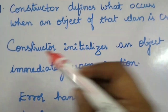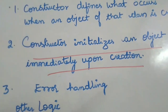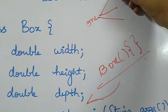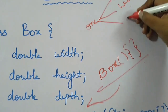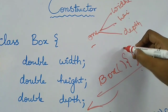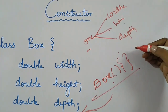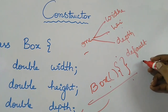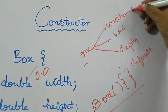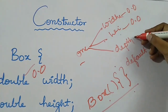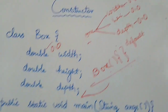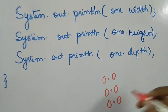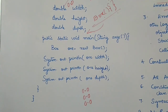The purpose of this constructor is that it initializes an object immediately upon creation. The object named 'one' holds three instance variables: width, height, and depth. The constructor initializes them to the default values of the primitive data types. The default value for double is 0.0, so width, height, and depth will all be initialized to 0.0. When we print those values, the output will be 0.0, 0.0, and 0.0.